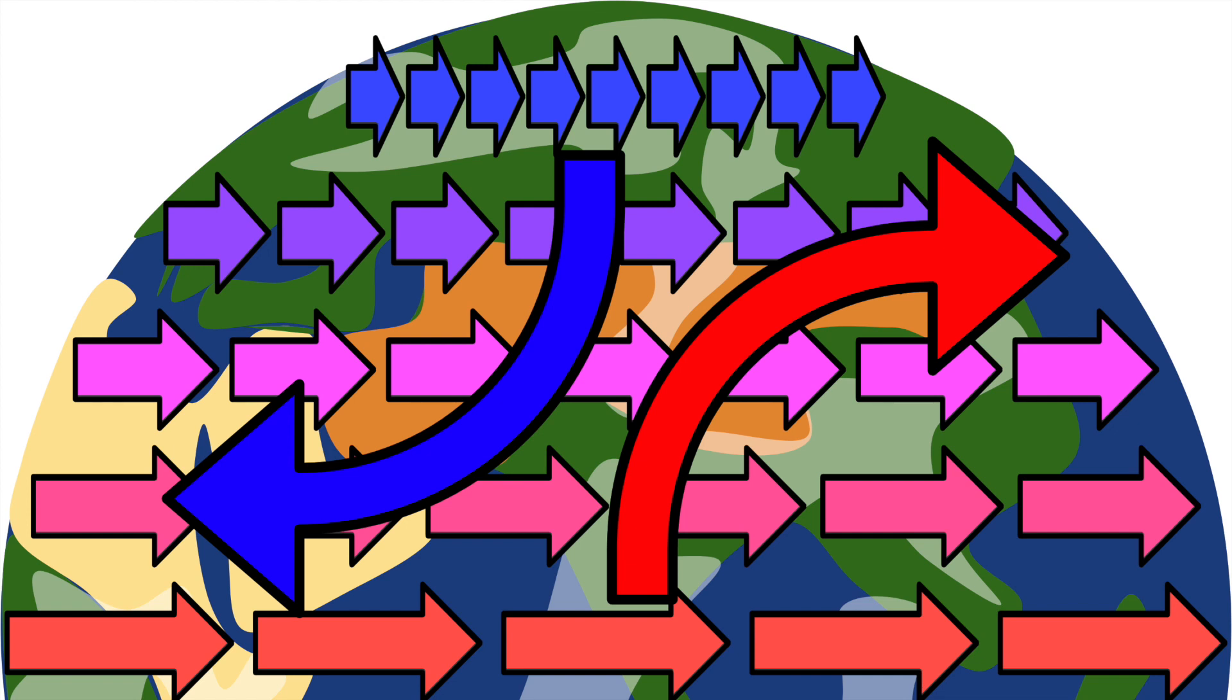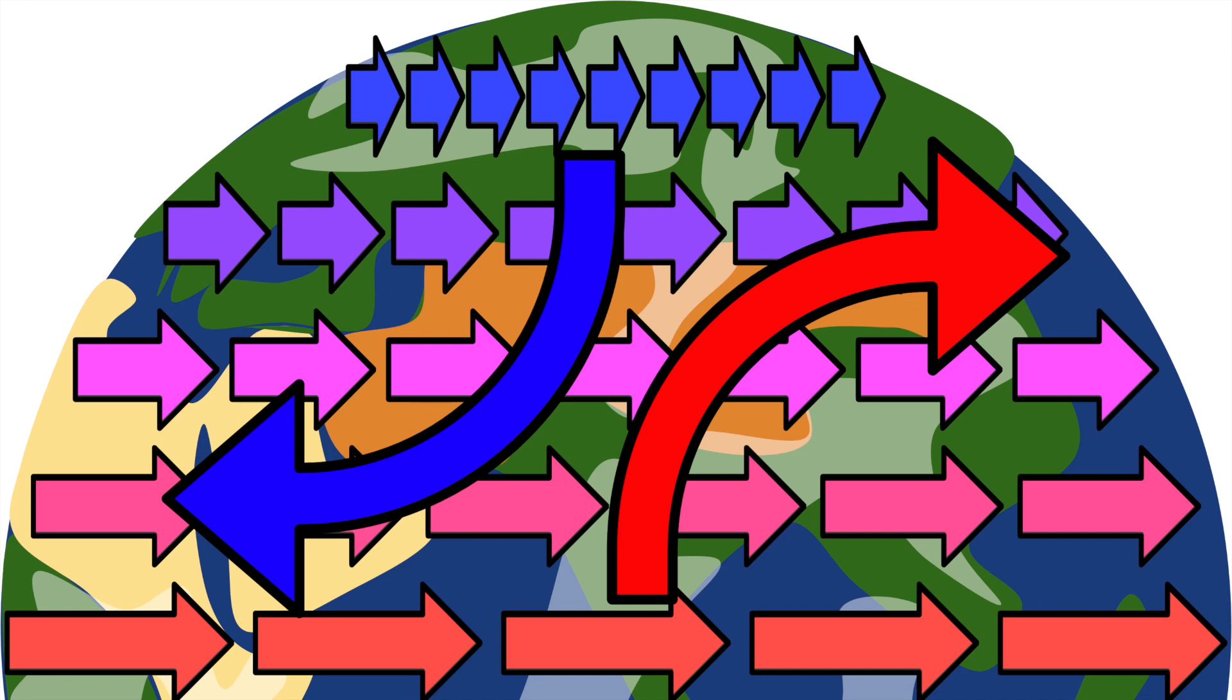This effect would also be present on a rotating circle. If you drop something from really high up, it'll seem to move sideways because it isn't moving as fast as the ground below it.